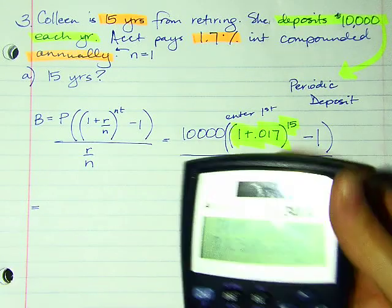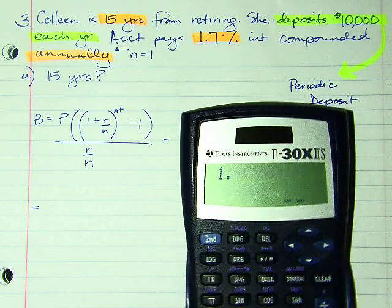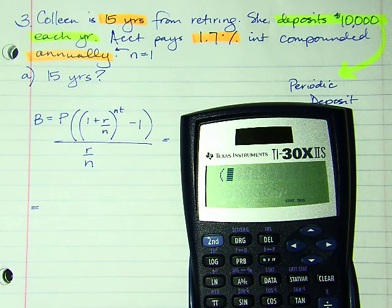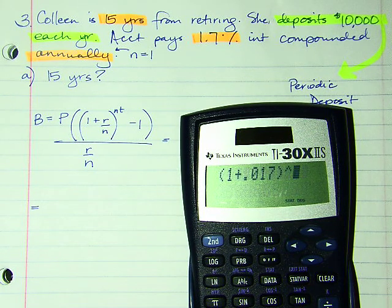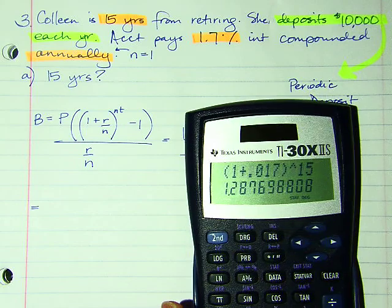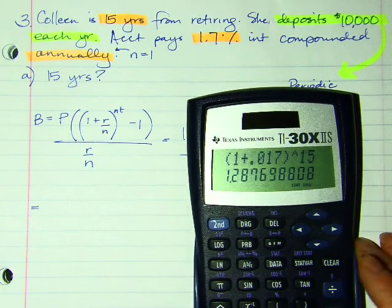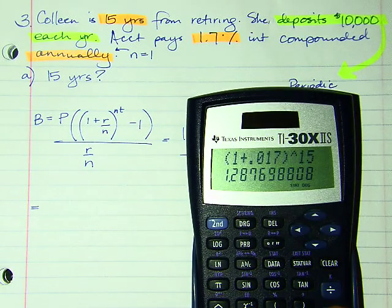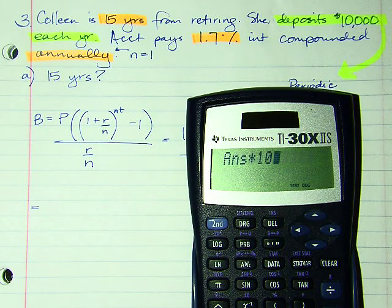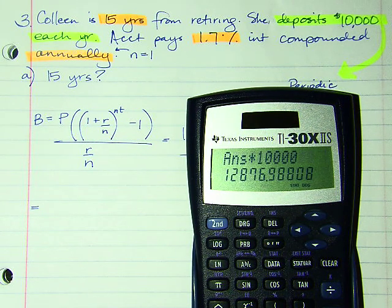Using my calculator: (1 + 0.017)^15. Now I'm going to take that result and multiply it by 10,000. But wait — I have to subtract 1 first.